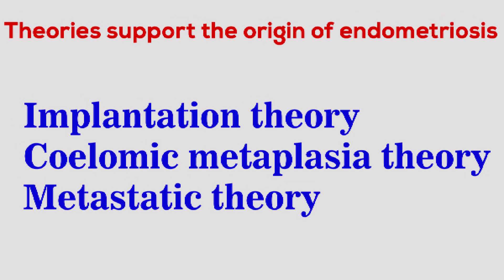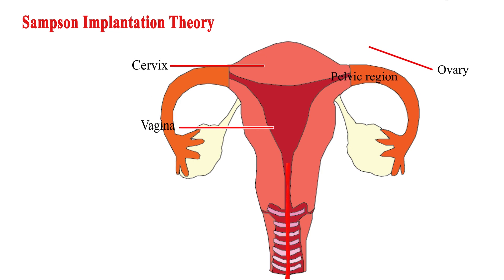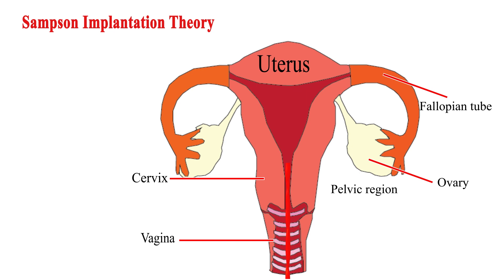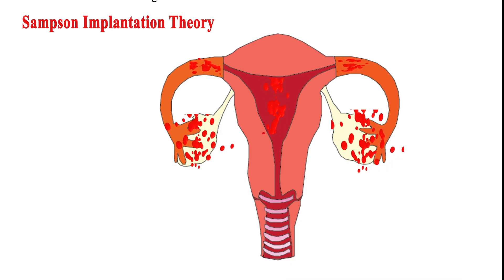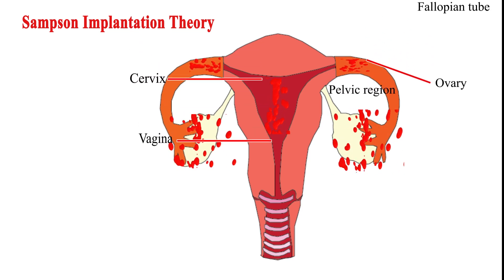Theories supporting the origin of endometriosis are the implantation theory, celomic metaplasia theory, and metastatic theory. Samson's implantation theory: menstrual endometrium normally takes the path through the cervix into the vagina to outside the vulva, but according to this theory there is back-passage of this menstrual endometrium through the fallopian tube with spilling.